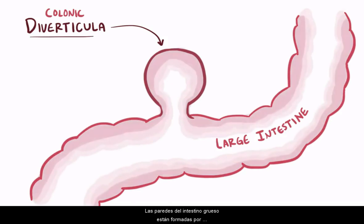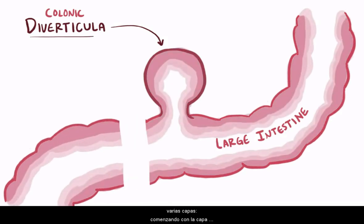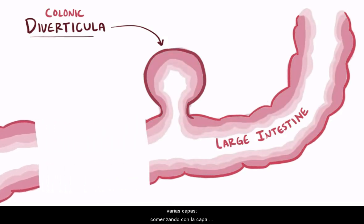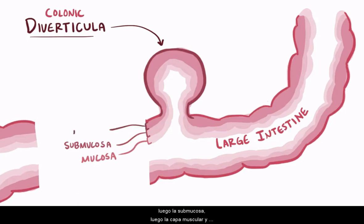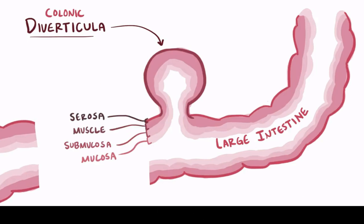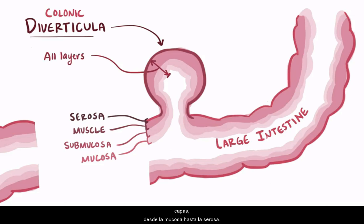The walls of the large intestine are made up of several layers, starting with the inner layer, the mucosa, then the submucosa, then the muscle layer, and finally the serosa. Sometimes these little pouches include all the layers, from mucosa to serosa, and these are called true diverticula.